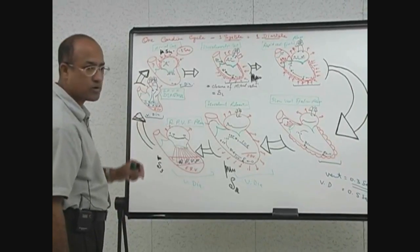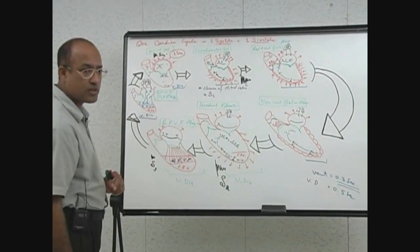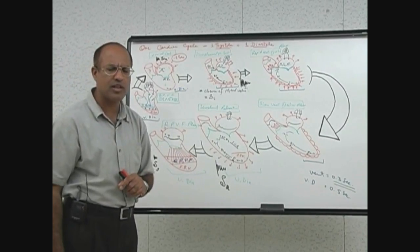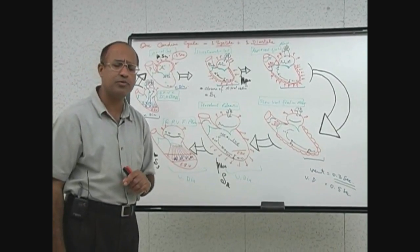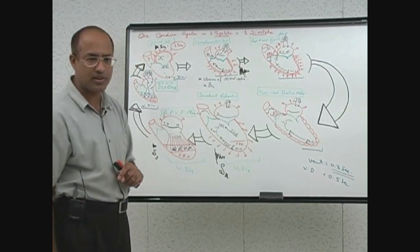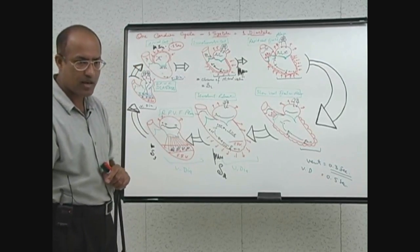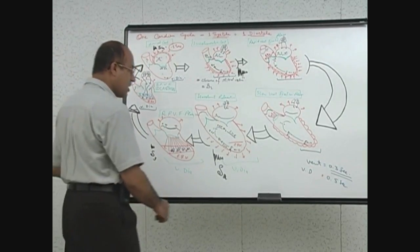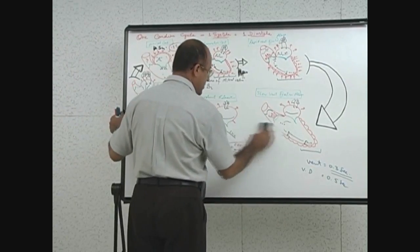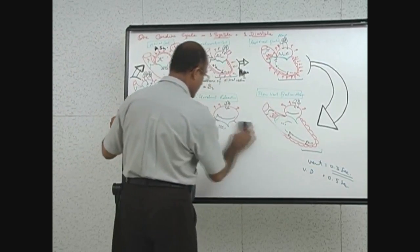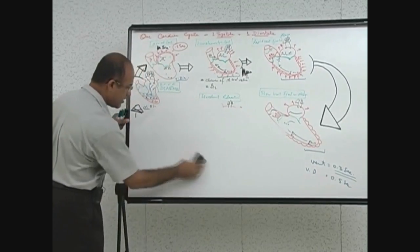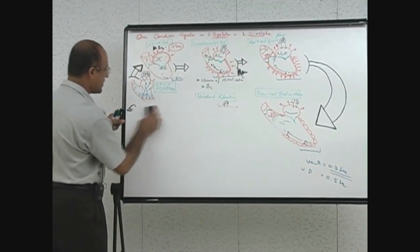S4 is produced when there is a hypertrophied ventricle and the atria contract forcefully against that stiffened ventricle. Now we will present all these cardiac cycle events in a graphical fashion.